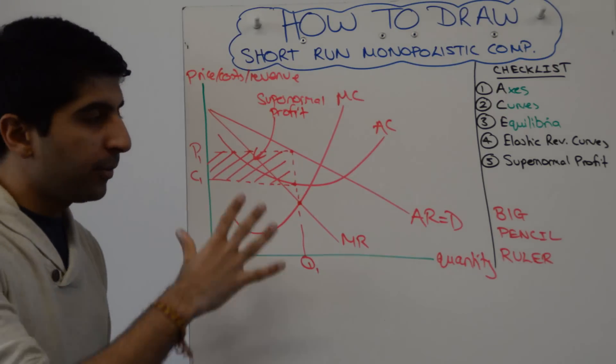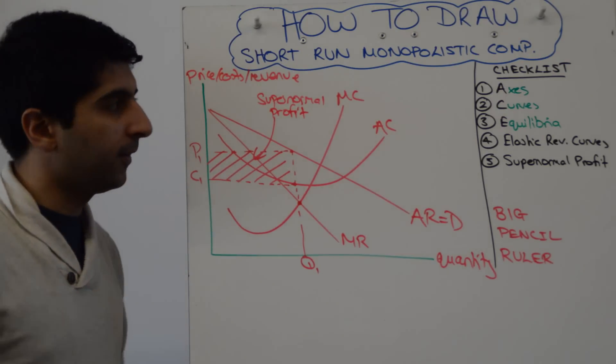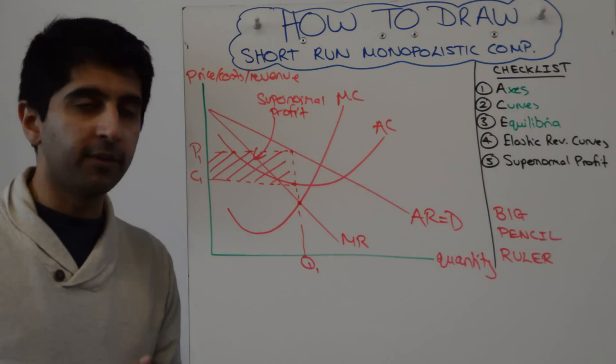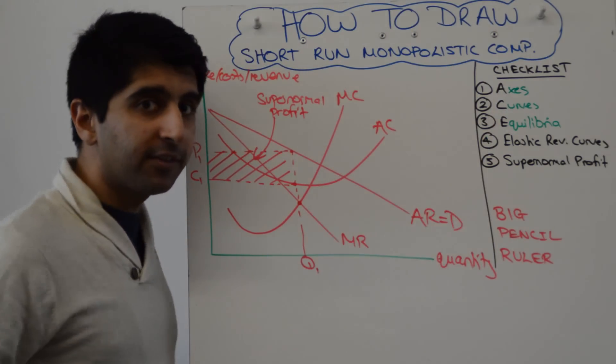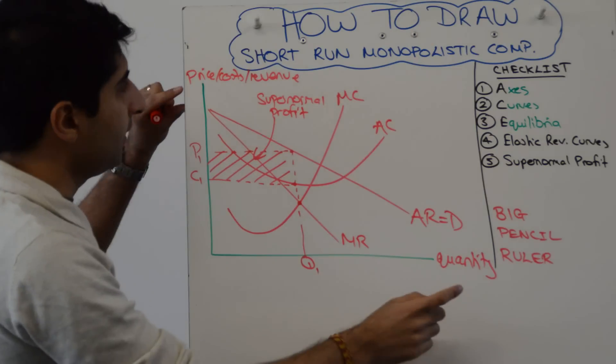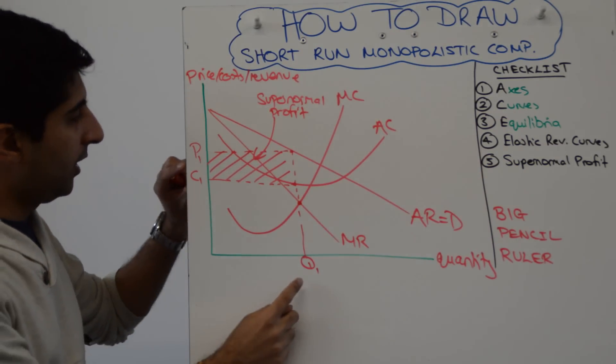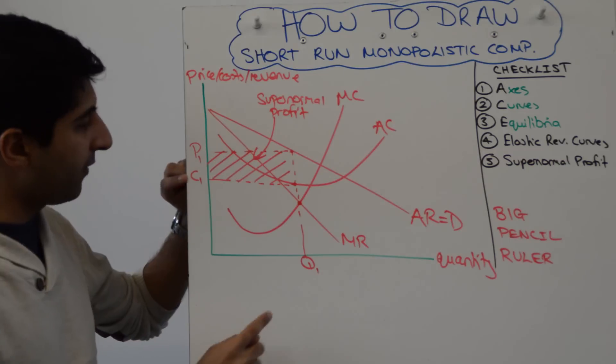Alright if we're happy with that we then go through our checklist. Very useful to do this to make sure nothing has been left out and no mistakes have been made. Have we aced the diagram? Have we labelled our axes? Yes we have. Have we labelled our curves? Yes we have. Have we labelled our equilibria, the profit maximizing equilibria? Yes we have.